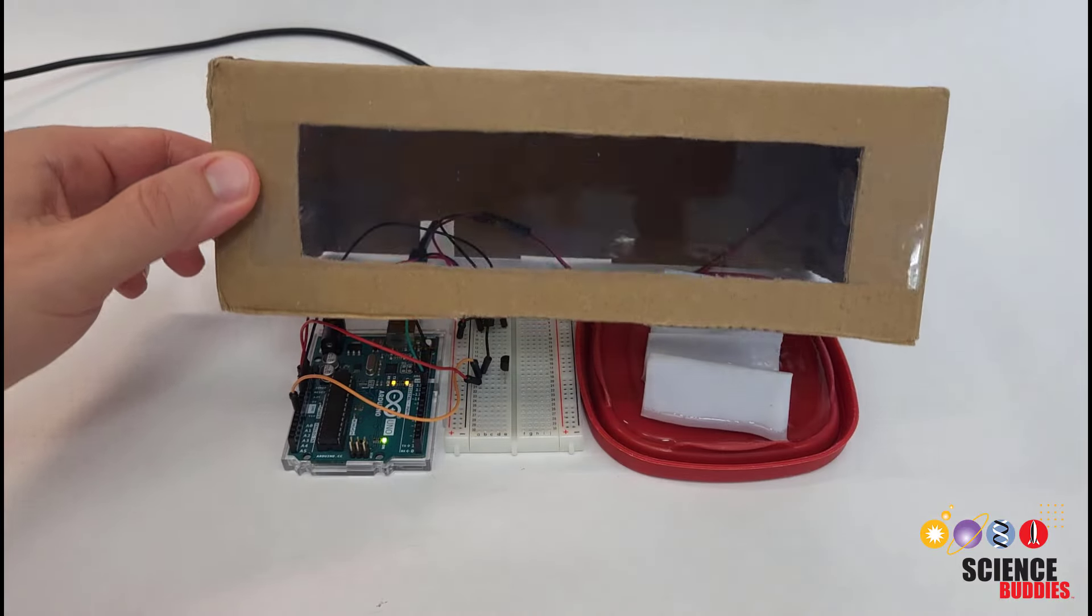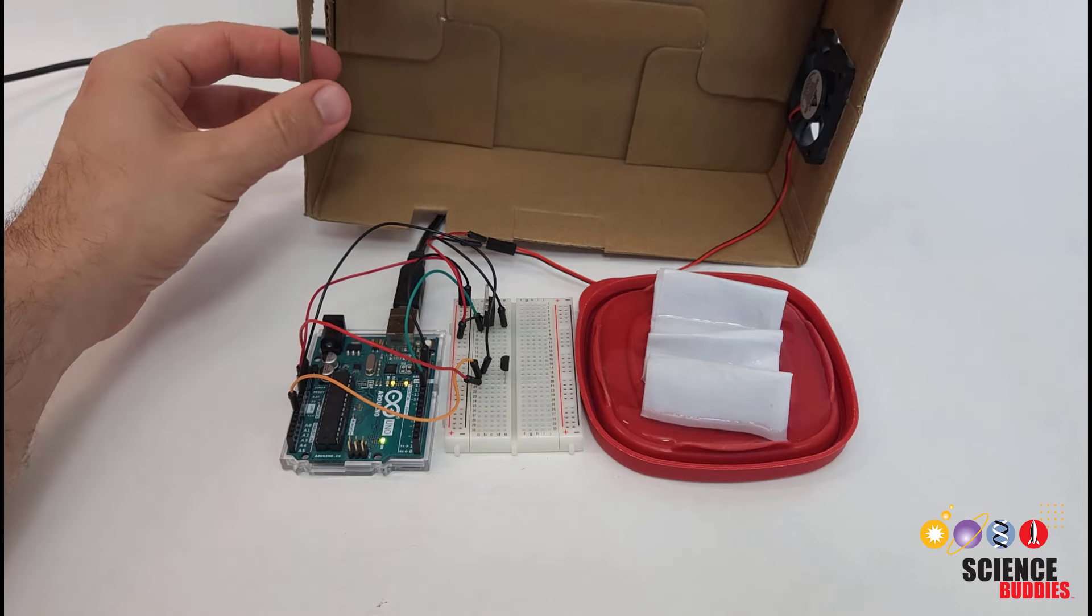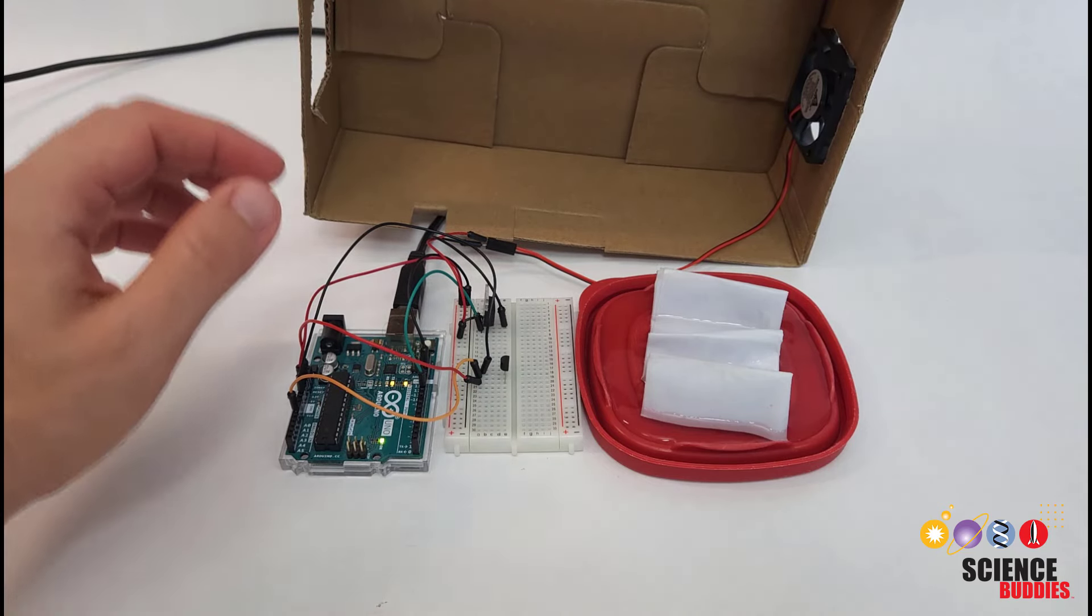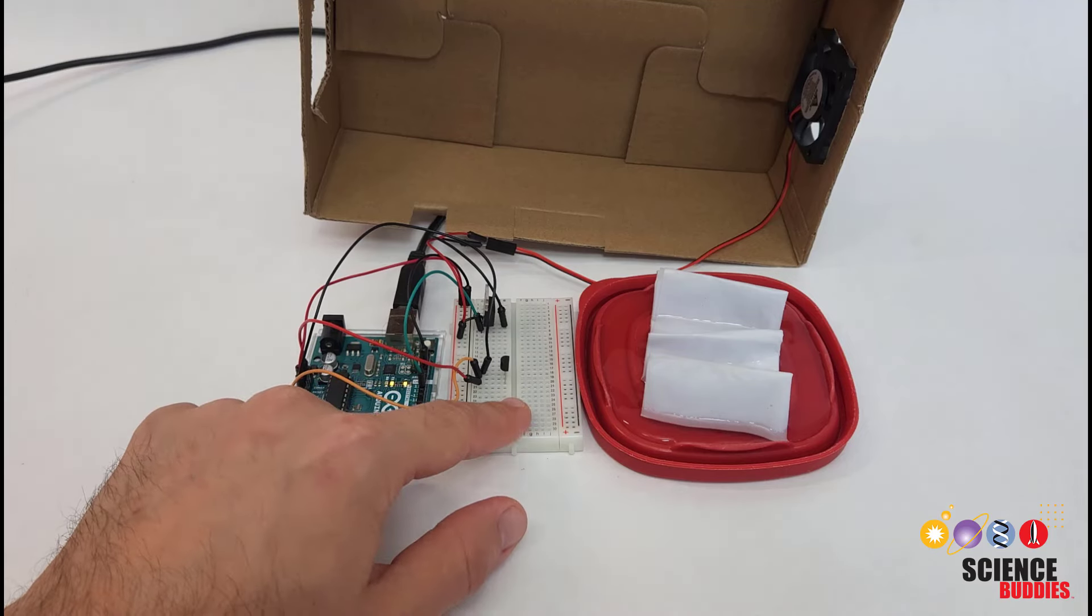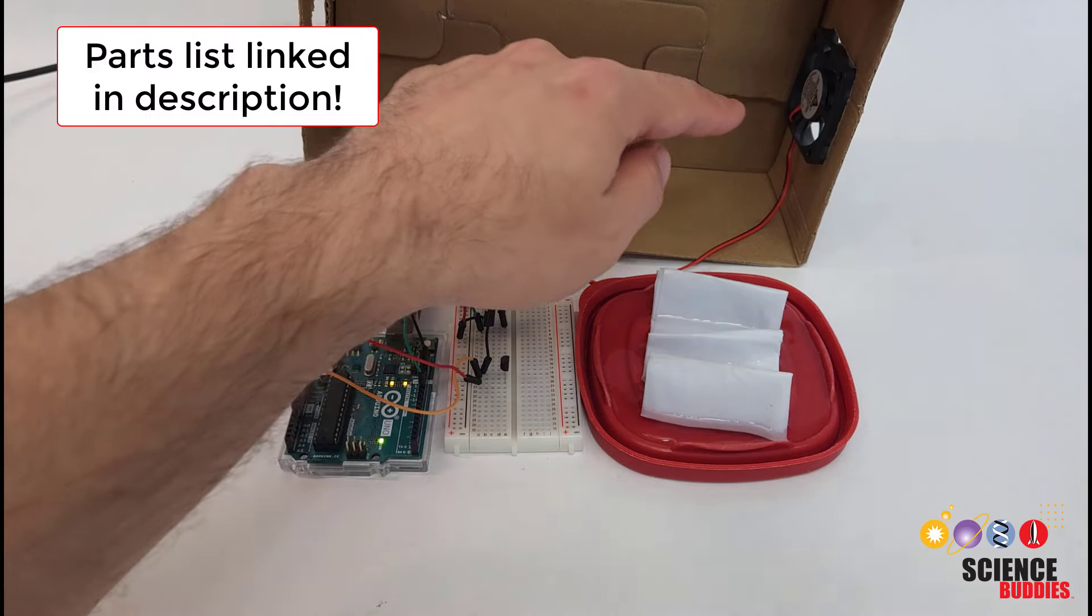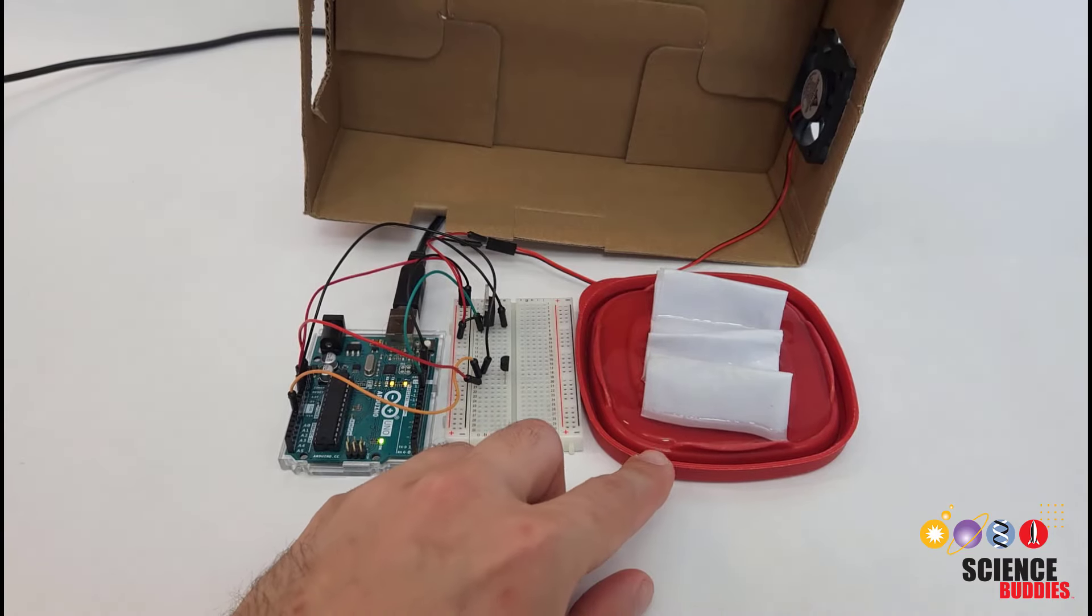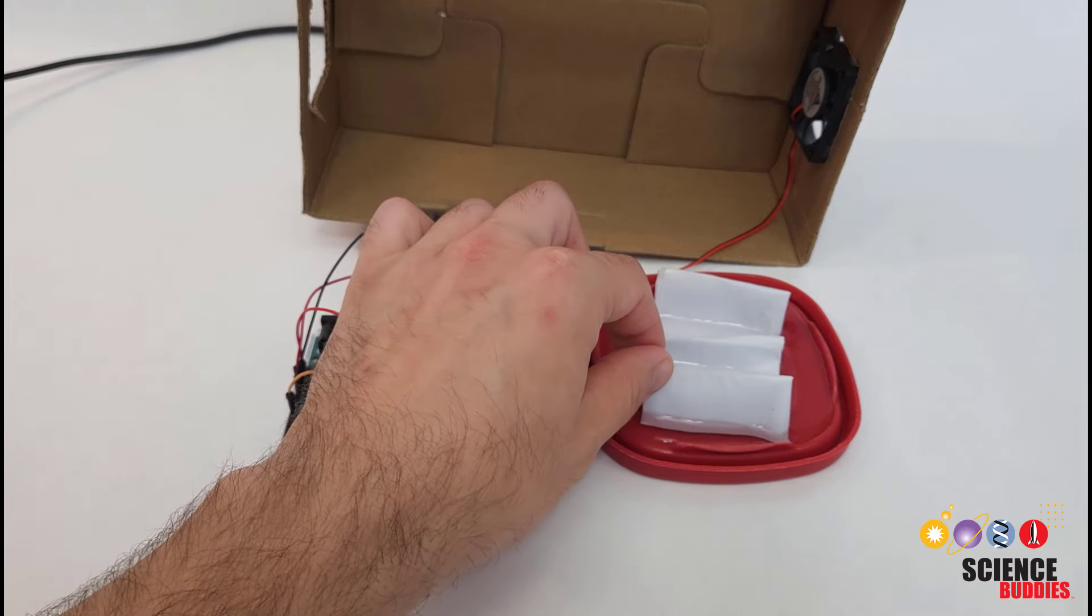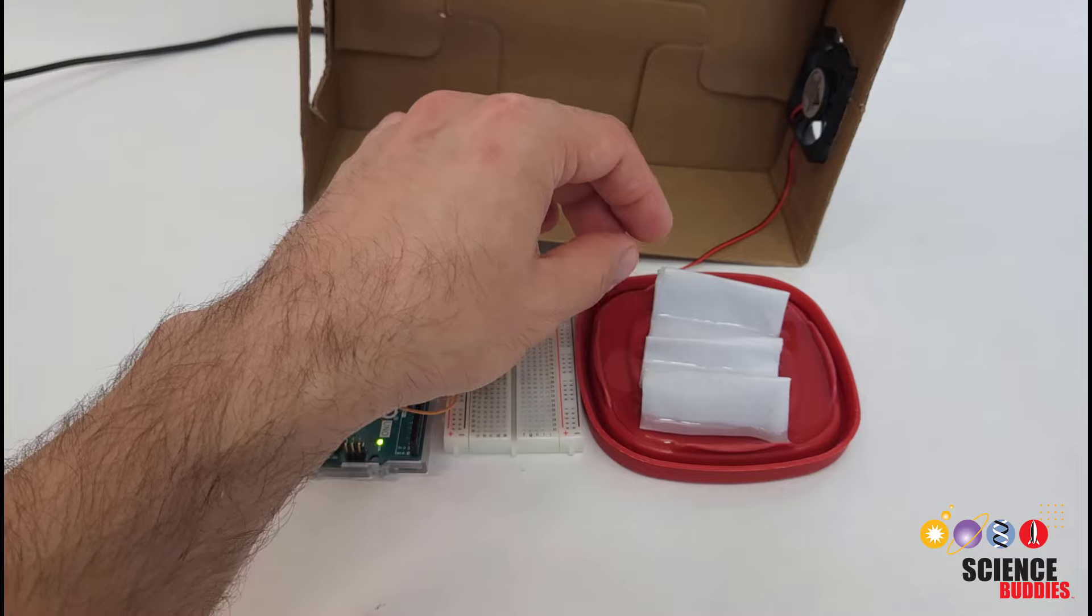In this video, I will show you how to build a model evaporative cooling system with an Arduino. Pulling up this cardboard box to take a look at what we have here, there is an Arduino, a breadboard with a temperature sensor, a cooling fan mounted in one hole cut out of the side of the box, and a tray of water with an accordion folded piece of paper to act like fins to help the water evaporate.